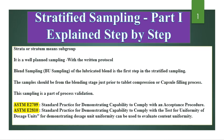ASTM E2709 is for standard practice for demonstrating capability to comply with acceptance procedures, and ASTM E2810 is for standard practice for demonstrating capability to comply with the test for uniformity of dosage units — that is, content uniformity. These two guidelines are for blend uniformity and content uniformity. As per USP, the content uniformity was done at last on only 10 units, so based on those 10 units the whole batch cannot be rejected or approved. That is why this sampling type and these guidelines came into the picture.